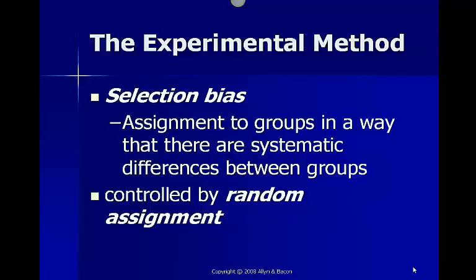Another possible problem is in picking our participants. Selection bias is when our participants are assigned to groups in such a way that there are systematic differences between the groups. For example, if we put in an ad and tell people to show up at a certain time, and as they show up we put all the males in one group and females in the other group, we have a systematic difference between the two groups — one is all male, one is all female — and that could affect the outcome of our study. We can control this by using random assignment, where the easiest analogy is picking names out of a hat, so everybody has an equal chance of being put in either group A or group B.